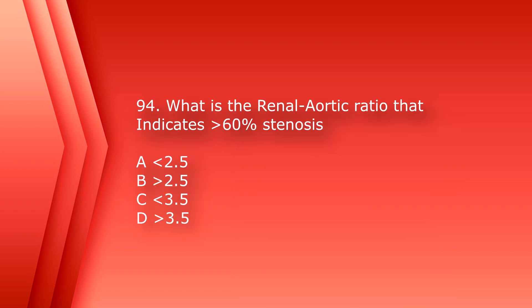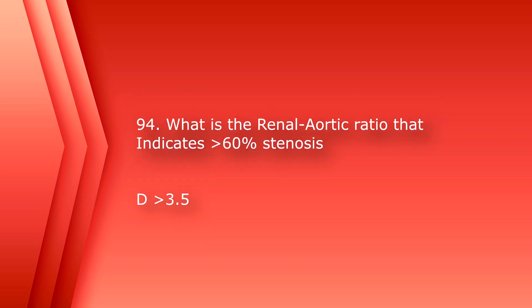Number 94: what is the renal aortic ratio that indicates greater than 60% stenosis? A. Less than 2.5. B. Greater than 2.5. C. Less than 3.5. D. Greater than 3.5. The answer is D. Greater than 3.5.